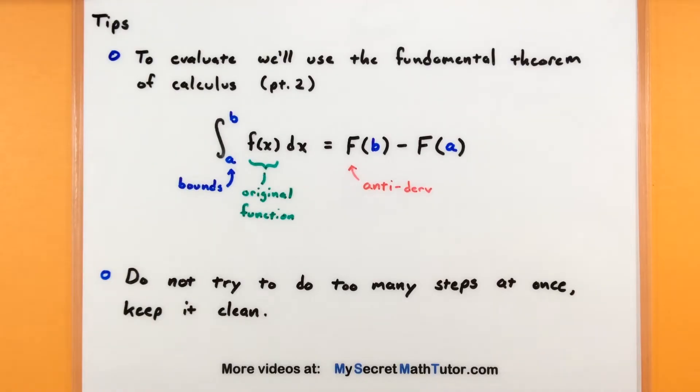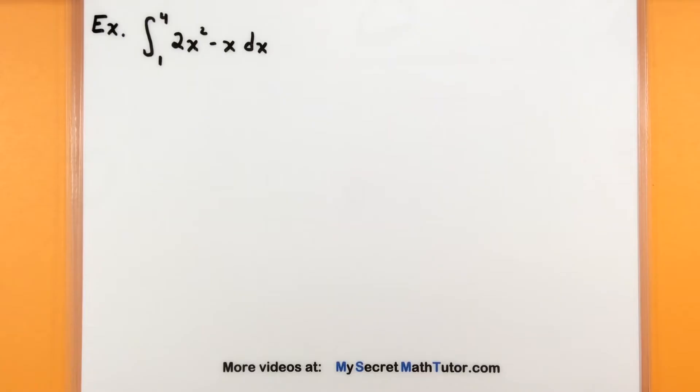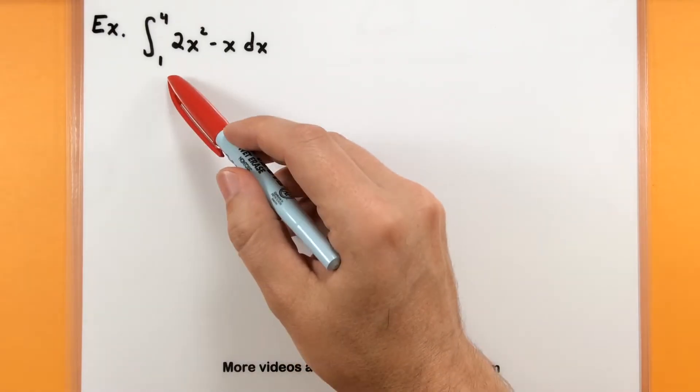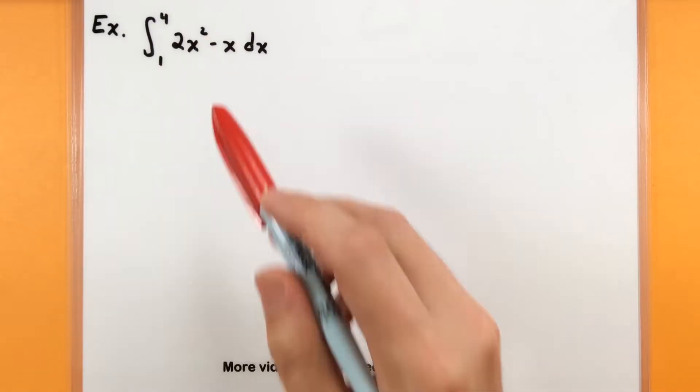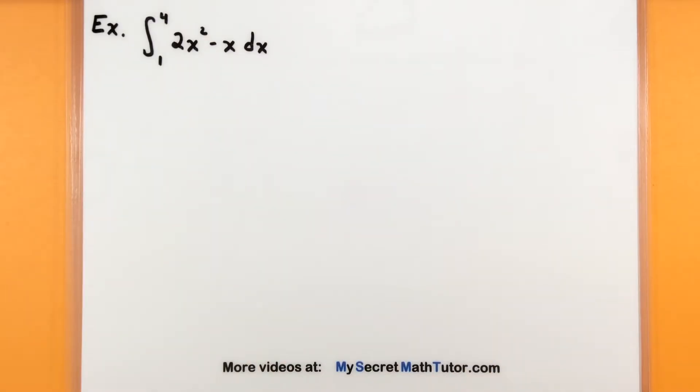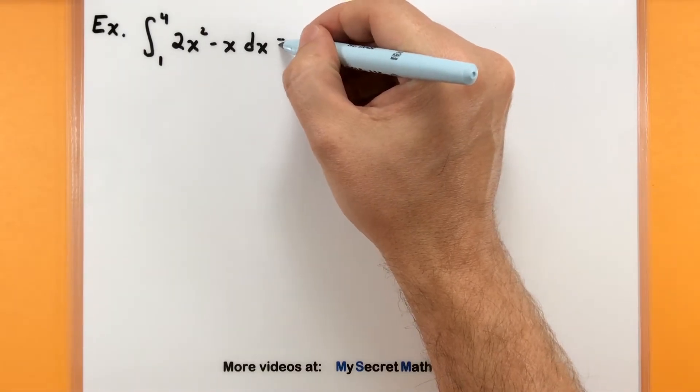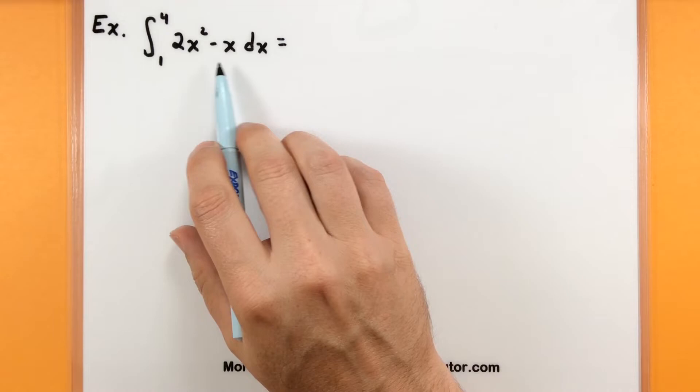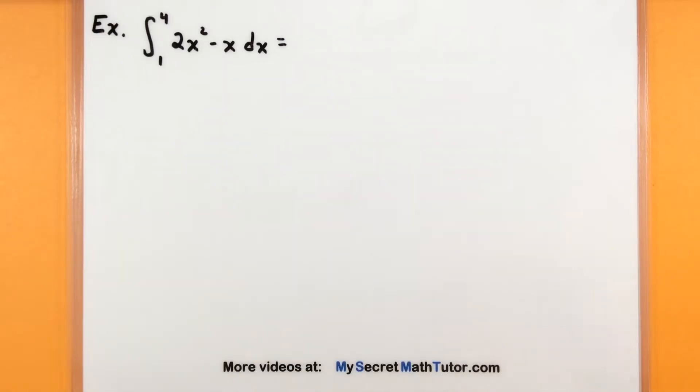In this first one, I'm dealing with the integral from 1 to 4 of 2x squared minus x. And in the first step, you really just want to worry about finding that antiderivative. Yes, we'll eventually plug in the bounds and do all that fun stuff, but don't worry about that for now. Just look at the function and see if you can find its antiderivative.